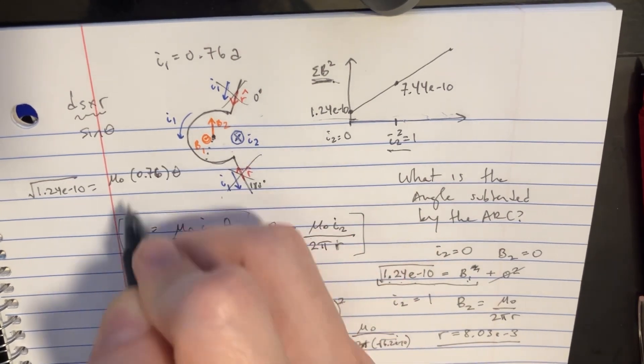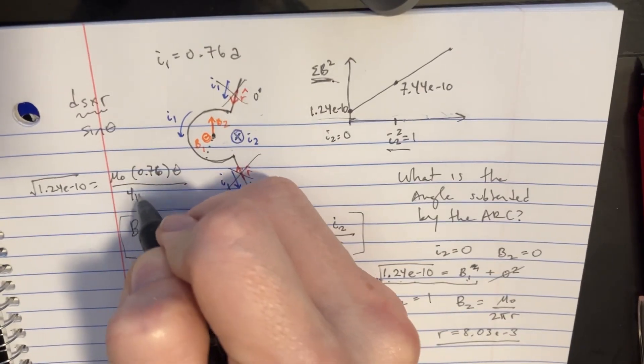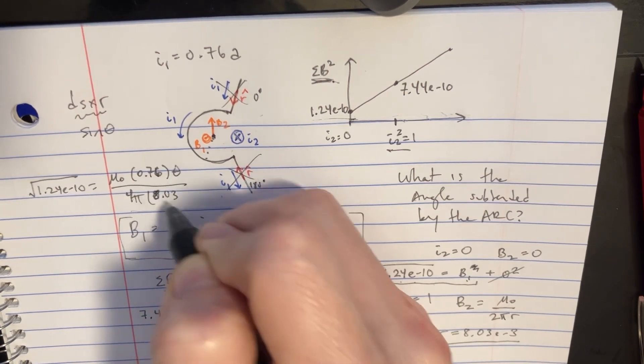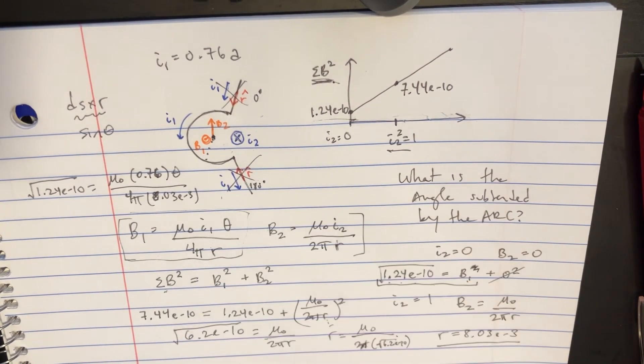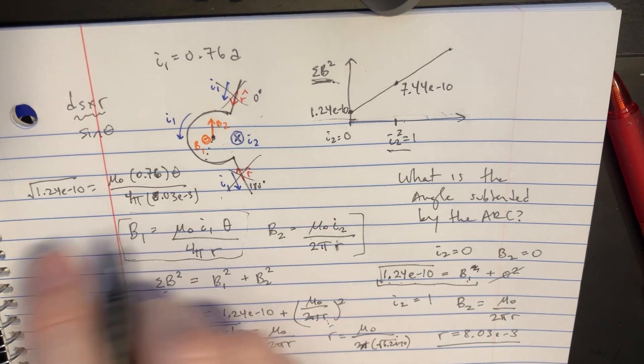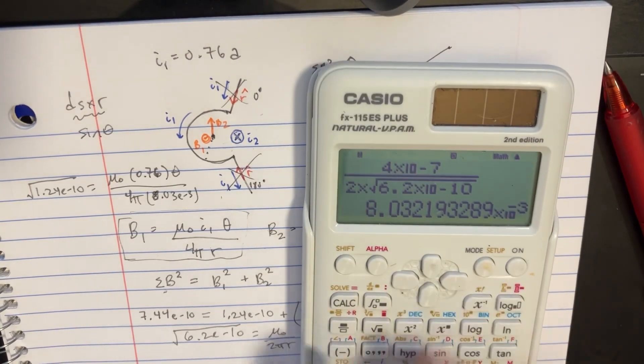And we're going to need the theta there. We can divide it by 4 pi and 8.03, e to negative 3. So, rearranging that, we should be able to solve for theta here.